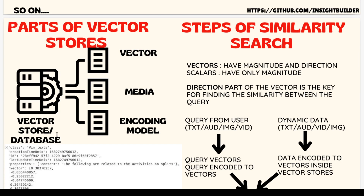A vector store is basically a database which contains vectors, the media (the data you're going to store), and an encoding model. This model is a machine learning and AI model that can be either open source or closed source, like OpenAI's embedding functions. This is one main point to realize: in a traditional database, there will just be media with keys — basic numbers or hashes — but there will not be any kind of encoding model.